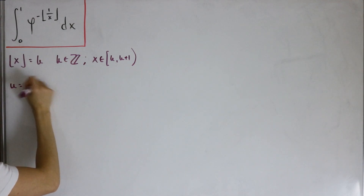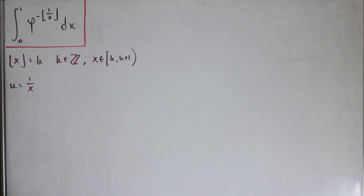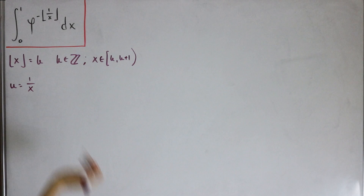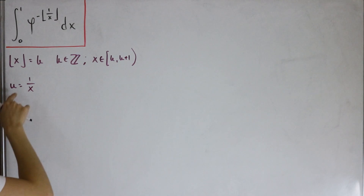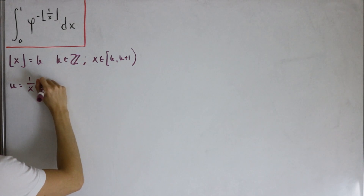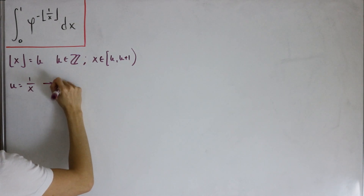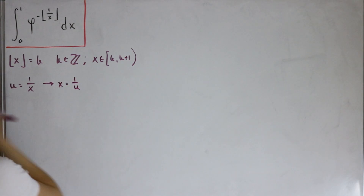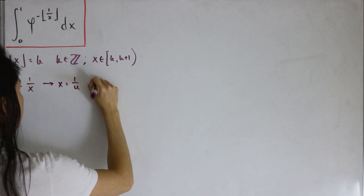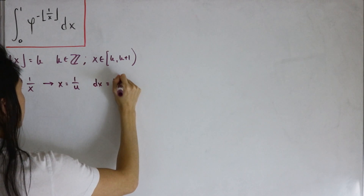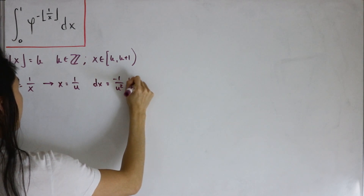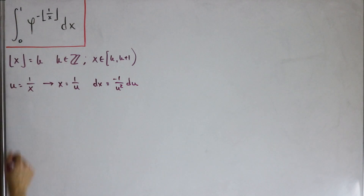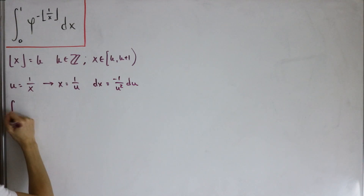We'll let u = 1/x to make things a little easier. We need to find the dx differential, so I'll solve for x: x = 1/u. Differentiating both sides, dx = -1/u² du.